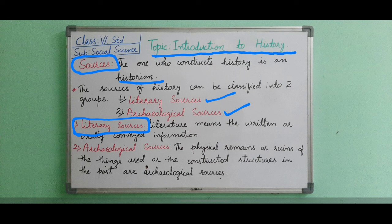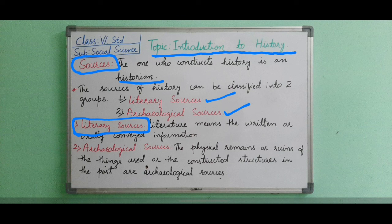Literary sources are further divided into two types: oral literature and written literature. Written literature can be further classified into native and foreign literature. Native literature means literature related to a particular land, while foreign literature is composed by foreigners. Oral literature comprises folk songs, stories, bylaws, and legends. Written literature is created by literates, but oral literature is created by illiterates.